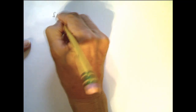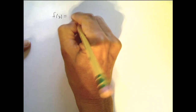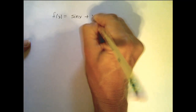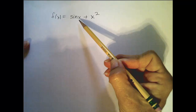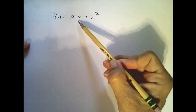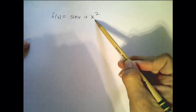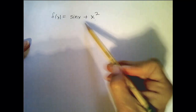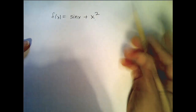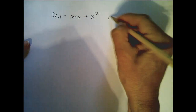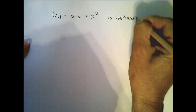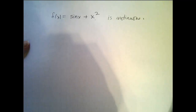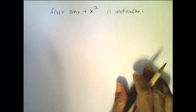For example, if my function f of x is sine of x plus x squared: sine of x is continuous everywhere, x squared is continuous everywhere, so f of x — as the sum of two continuous functions — is continuous everywhere. That's what that theorem does for us.